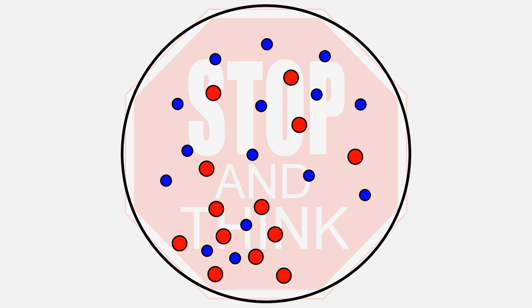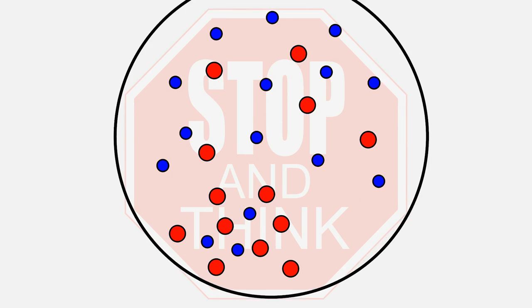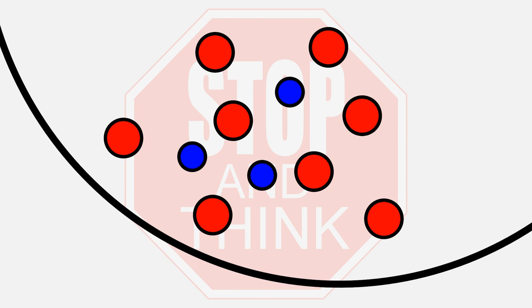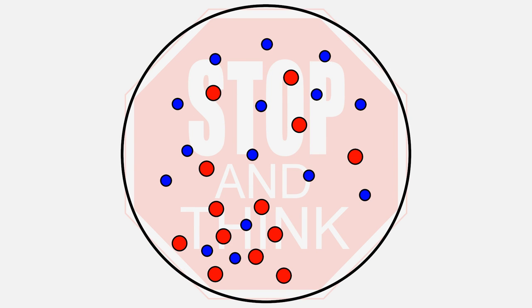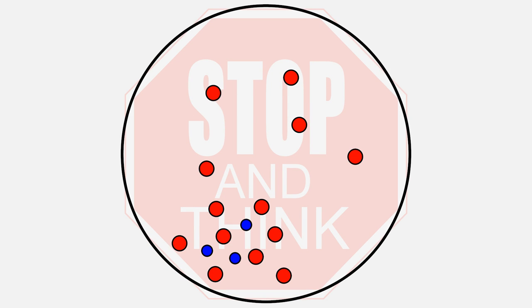But that was cheating, right? Imagine that in this example you are representing a person who is already convinced that there is more red dots than blue dots, because some time ago this person had seen just a fragment of this circle, didn't realize that this is only a fragment, and concluded that there is more red dots. I was representing the mind of such a person.